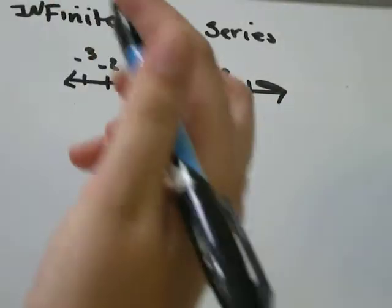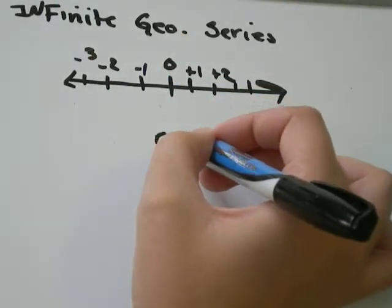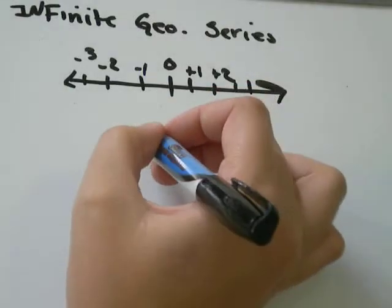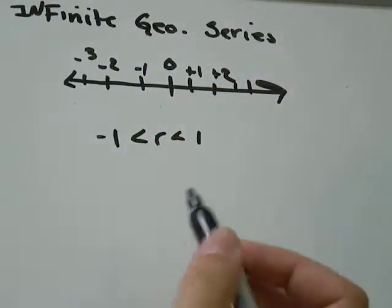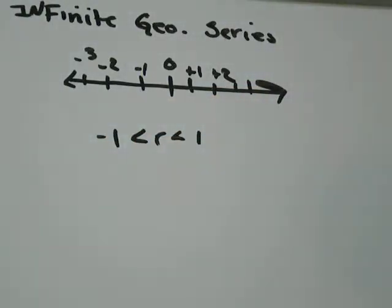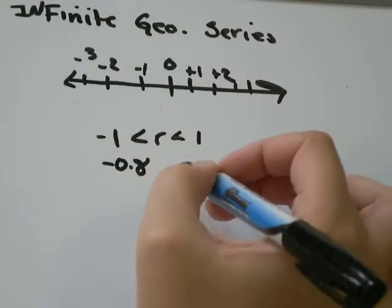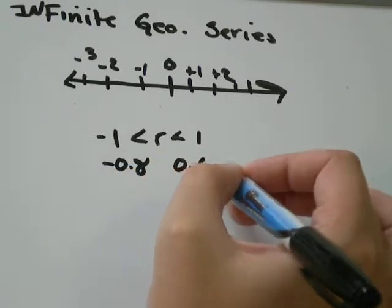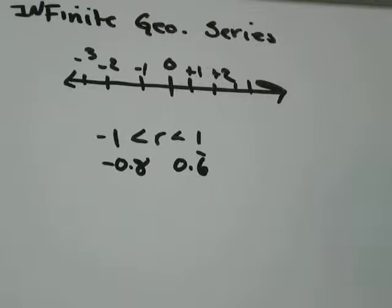Convergent geometric sequences. Because the common ratio is between positive 1 and negative 1. So think of all the positive and negative decimals that are between negative 1 and positive 1. It could be negative 0.8. It could be 0.6 repeating. Stuff like that will be a convergent geometric sequence.